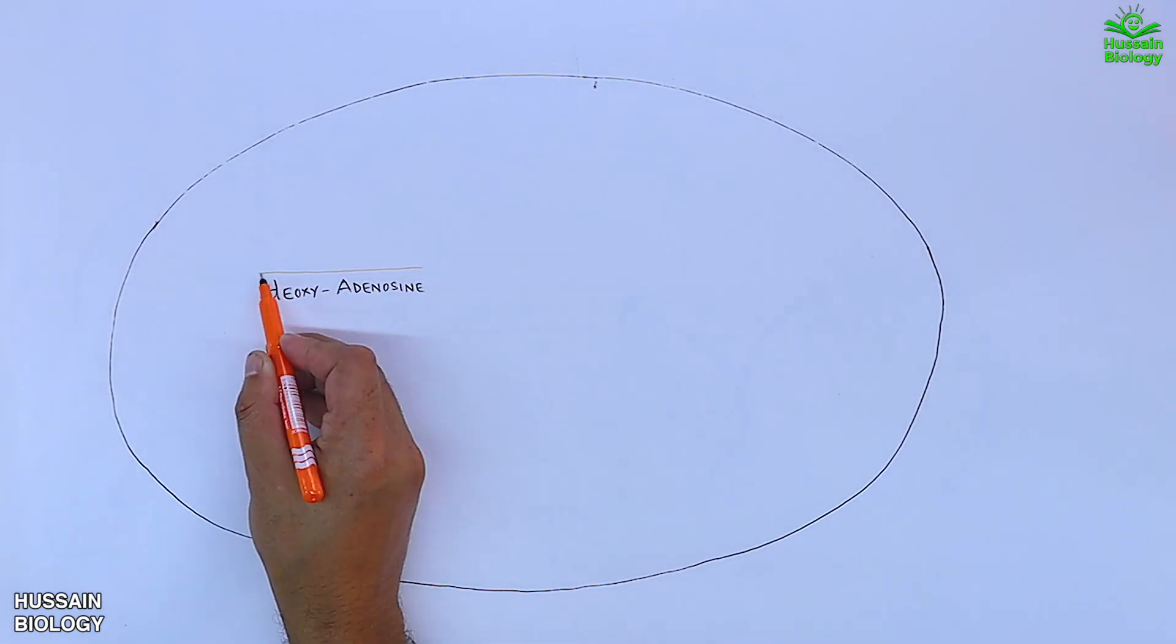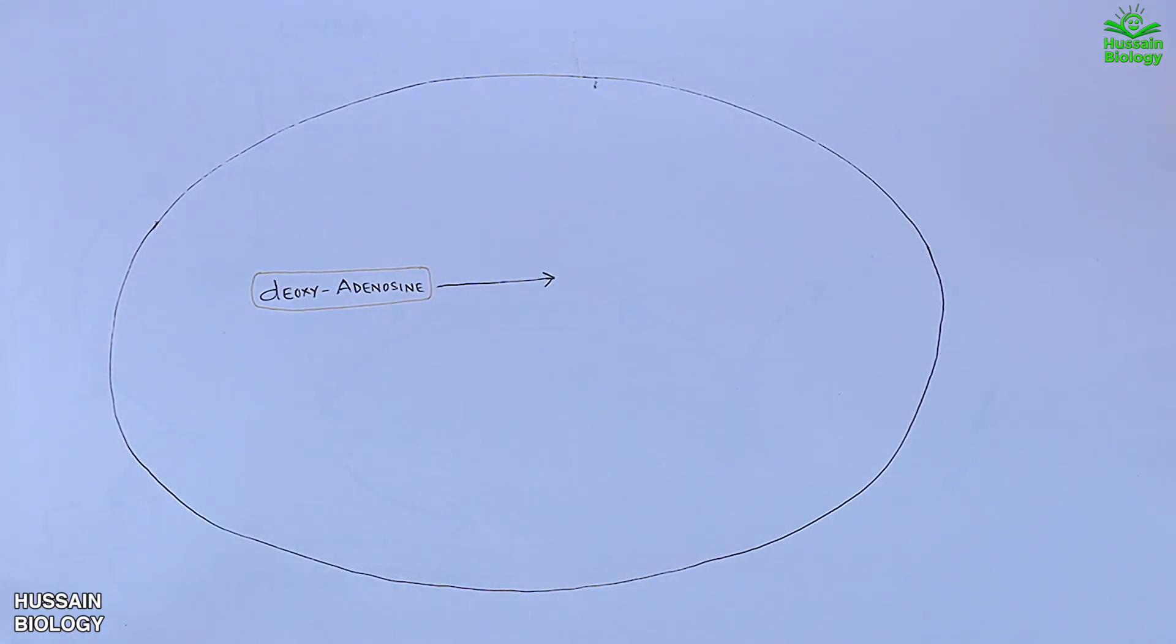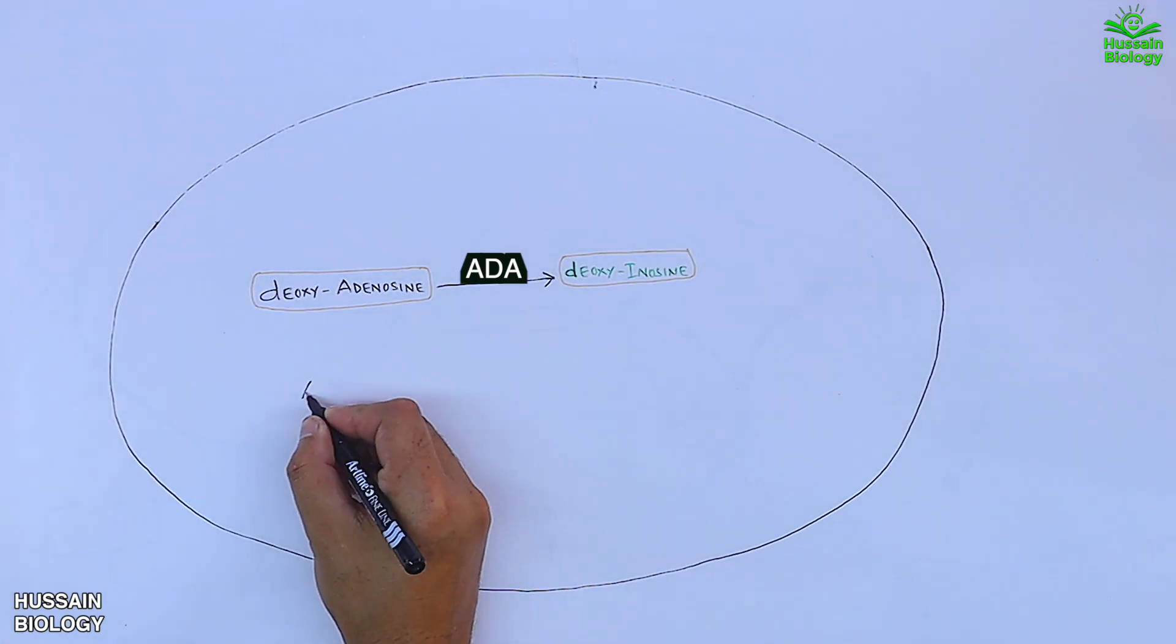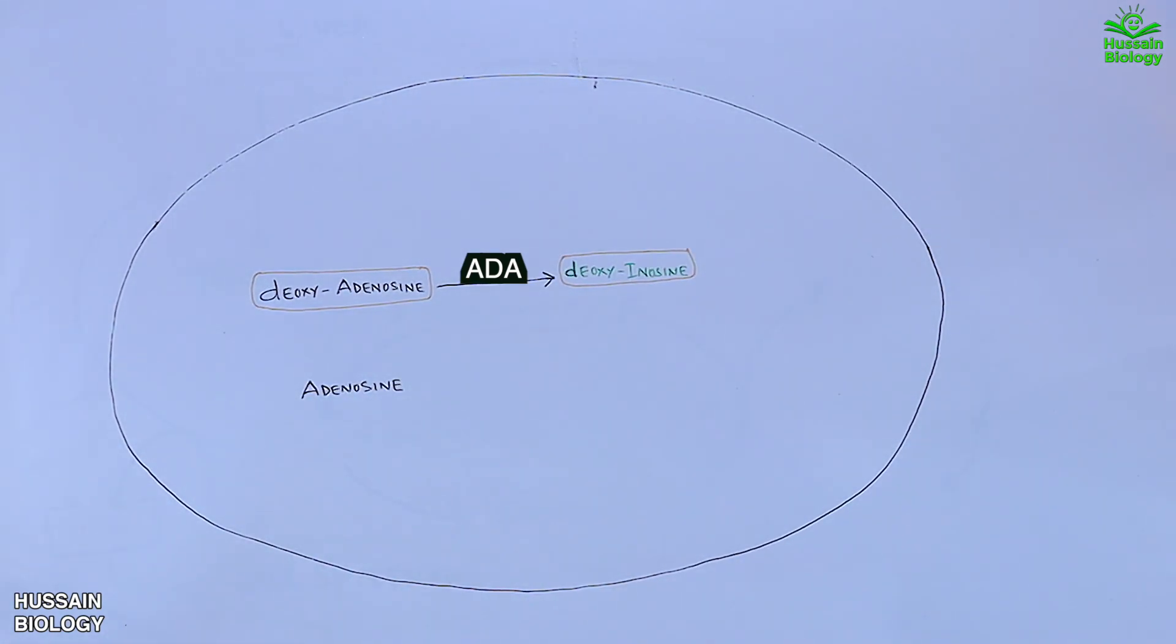This deoxyadenosine molecule is acted upon by ADA enzyme and gets converted into deoxyinosine as shown in the diagram. In the same way we have the adenosine molecule within the cell, and this adenosine is acted upon by ADA enzyme and gets converted into inosine.